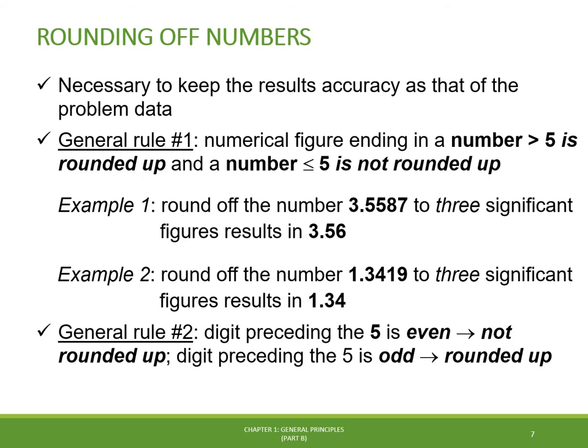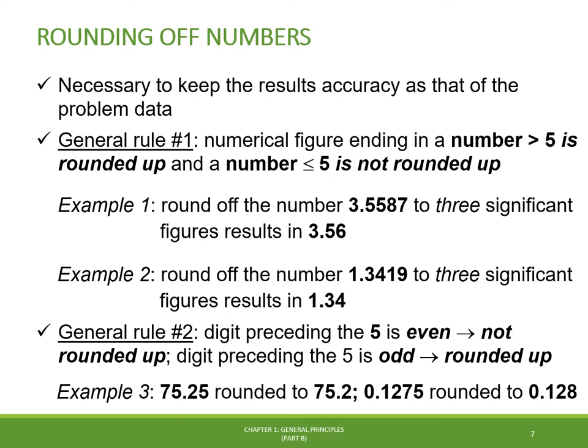The second general rule states that if the digit preceding 5 is an even number, it is not rounded up; otherwise, if the digit preceding 5 is an odd number, it is rounded up. For example, 75.25 rounded to three significant digits becomes 75.2, and 0.1275 rounded to three significant figures gives 0.128.